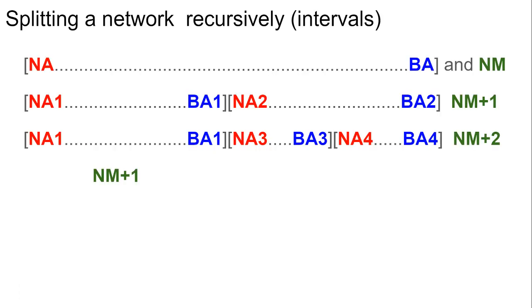If we talk about the network as an interval, we have the original interval with a network address, a broadcast address, and a netmask. If we split this interval in two, we'll have two intervals.